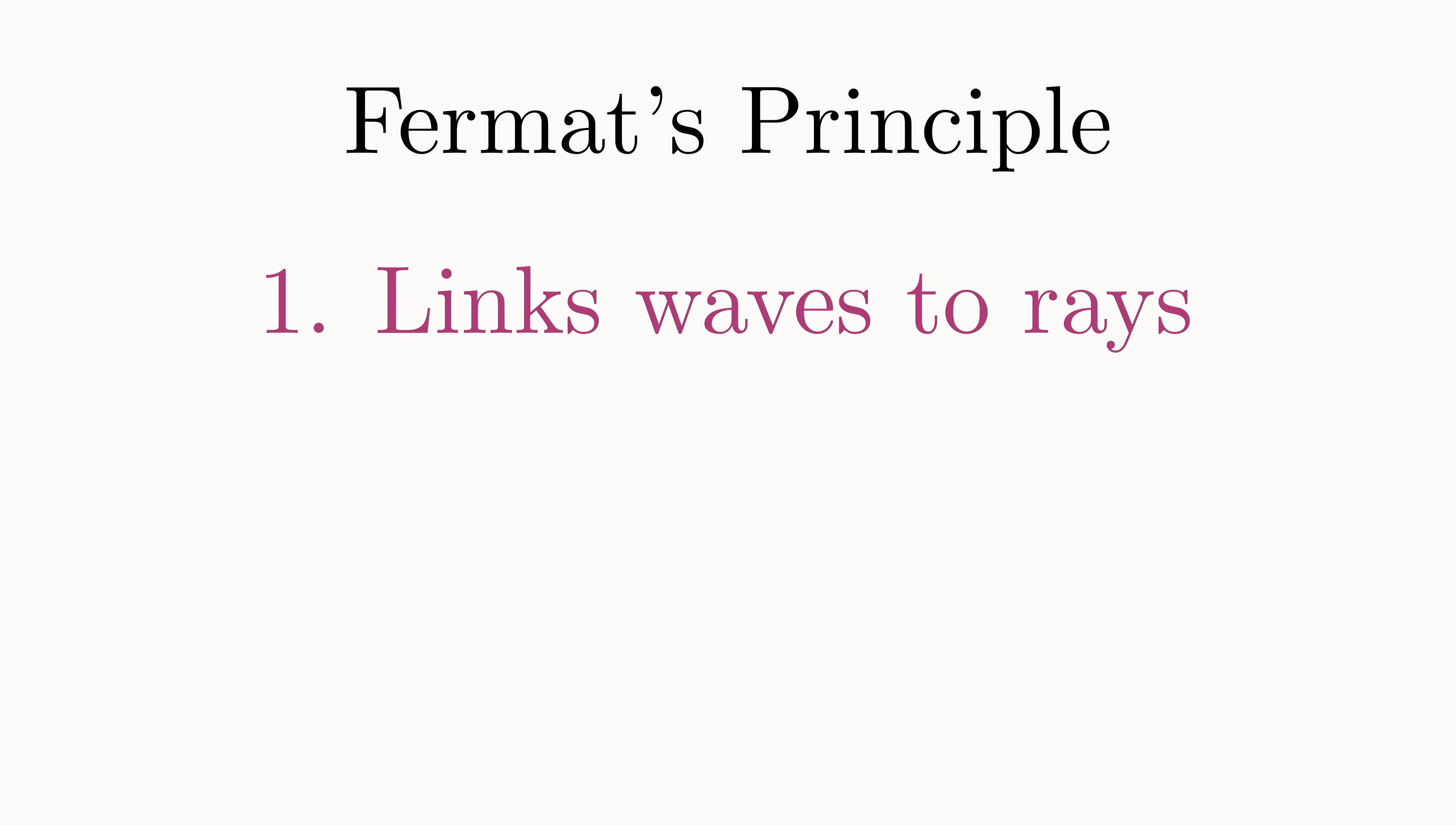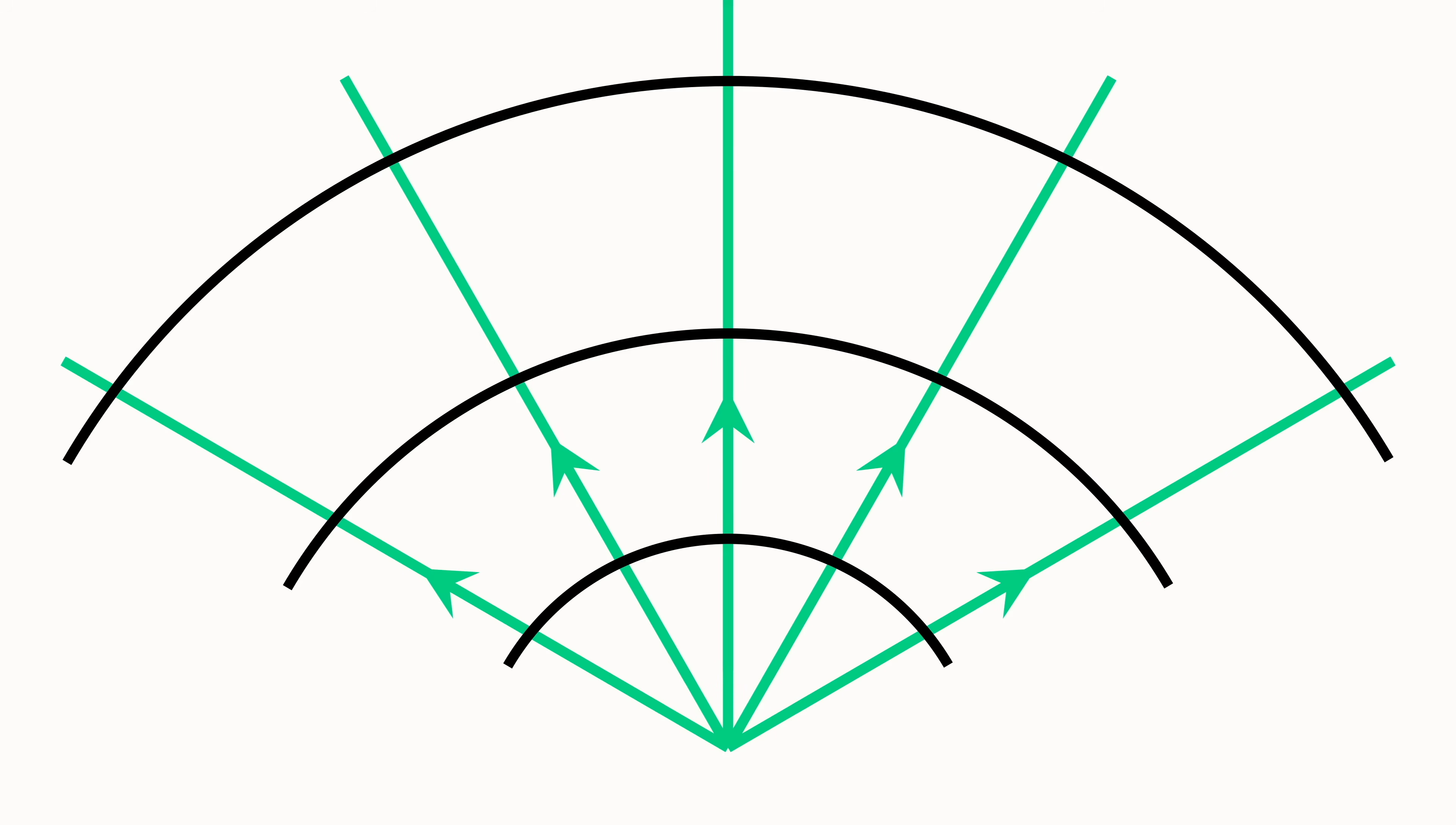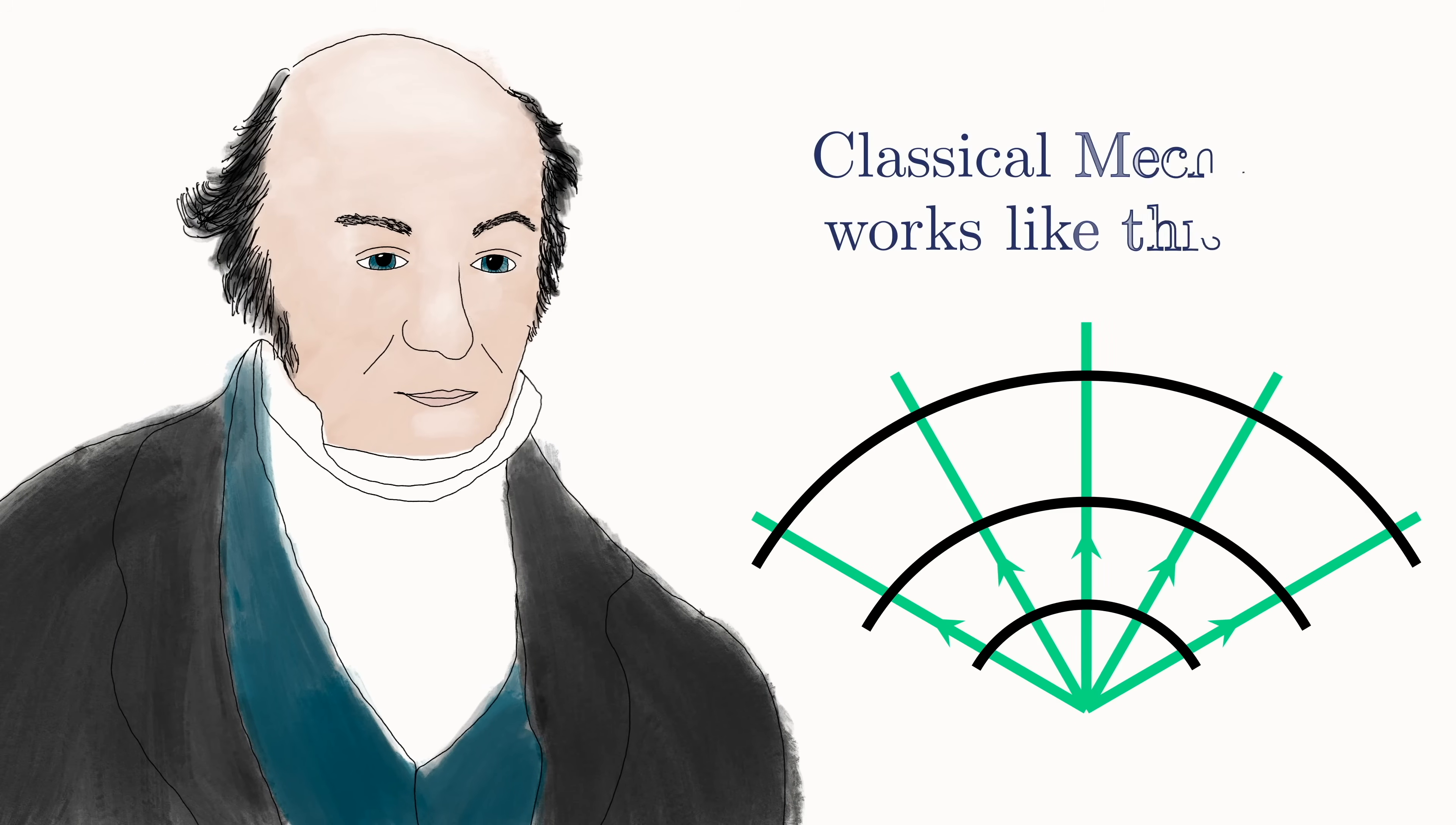So Fermat's principle provides a link between waves and rays. It also leads to another fundamental equation of optics known as the Iconal Equation, which determines the wave-fronts. So a beautiful duality emerges. If you first know the wave-fronts, you can always deduce the ray trajectories. Similarly, if you know the rays first, you can deduce the wave-fronts. Amazingly, according to Hamilton's optical-mechanical analogy, particles in classical mechanics can be described in the exact same way.